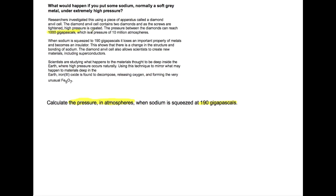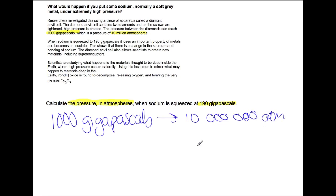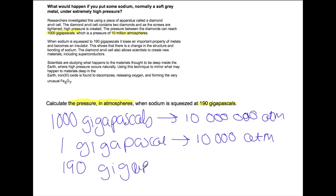So we are told that 1000 gigapascals is the same as 10 million atmospheres. So if we divide by 1000 we can find out what 1 gigapascal is. So that will give us 10,000 atmospheres. We then need to multiply up by 190 to give us 1,900,000 atmospheres as our answer.